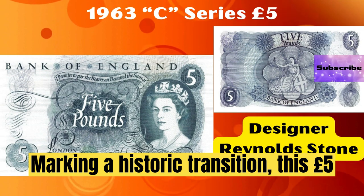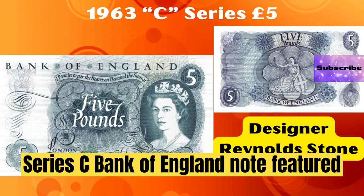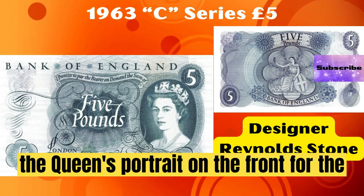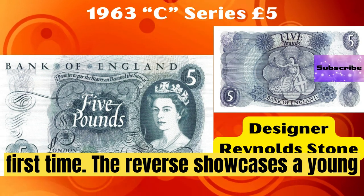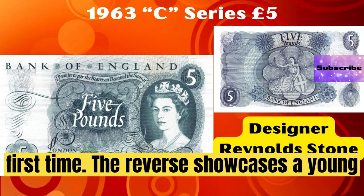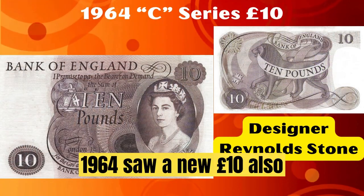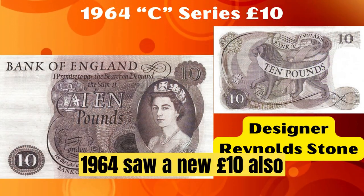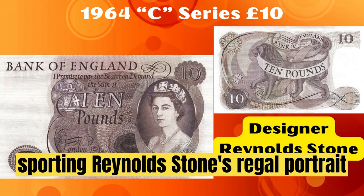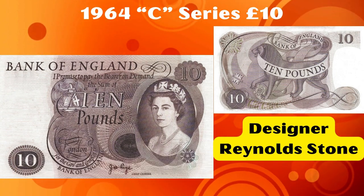Marking a historic transition, this £5 Series C Bank of England note featured the Queen's portrait on the front for the first time. The reverse showcases a young Britannia. 1964 saw a new £10, also sporting Reynolds Stone's regal portrait of Queen Elizabeth.